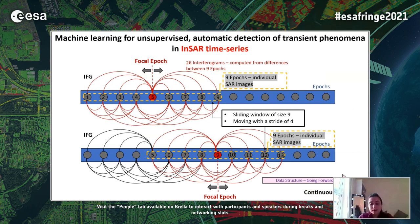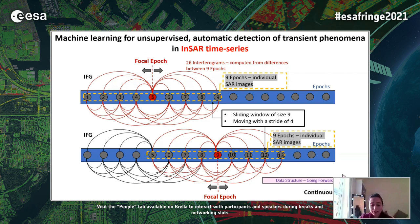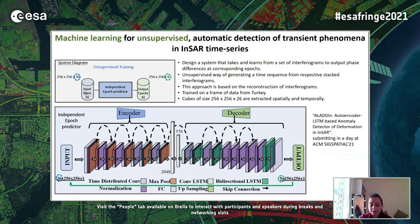In practice, in every training iteration we pass a set of 26 interferograms made up from nine epochs. The temporal sliding window of size nine runs within the epochs covered in a frame, moving forward in the time series with an overlap of five epochs between consecutive sequences. Each epoch appears four times in the training frame, balancing redundancy versus computing cost. The training frame used in the experiment is from Turkey, divided into patches of 256 by 256 with 50% overlap.